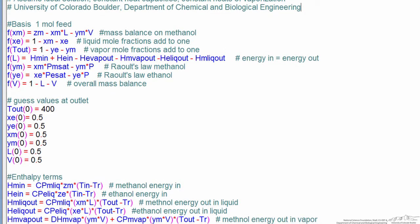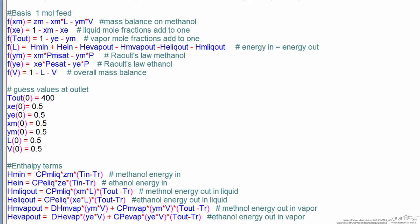So first thing, of course, remember that comments just have the number sign in front of them and they show up in a different color. But the way the nonlinear equation solver works is we write equations on the right side of the equal sign that we want to be equal to zero.